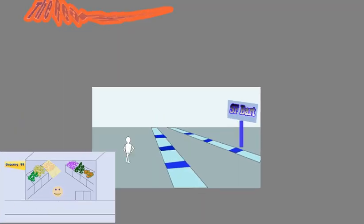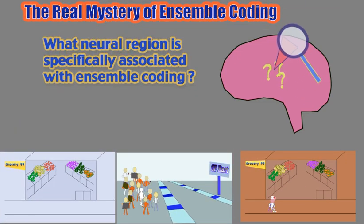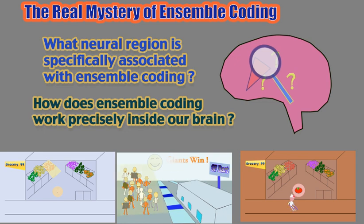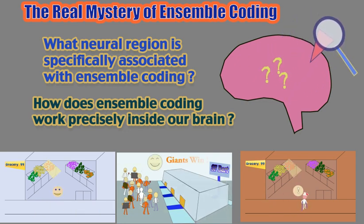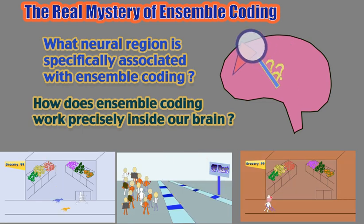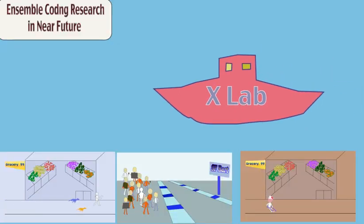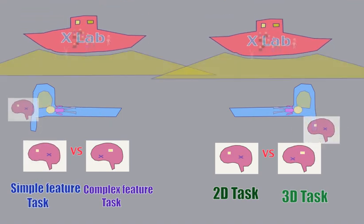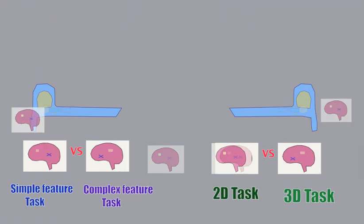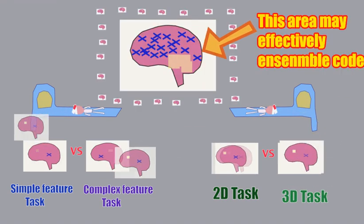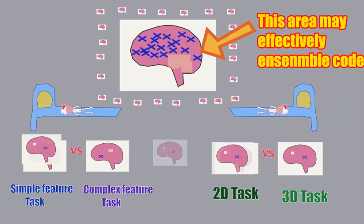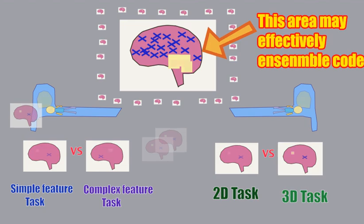Here is the real mystery: what neural region is specifically associated with ensemble coding? How does ensemble coding work precisely inside of our brain? Nobody knows the answer yet, but our neuroscientists are moving closer to answering these fascinating questions. By having participants inside the laboratory view different types of stimuli — simple, complex, 2D, or 3D — we can explore which areas in the visual processing stream can effectively ensemble code. Step by step, we are finding clues to solve the mysteries inside of our brain.